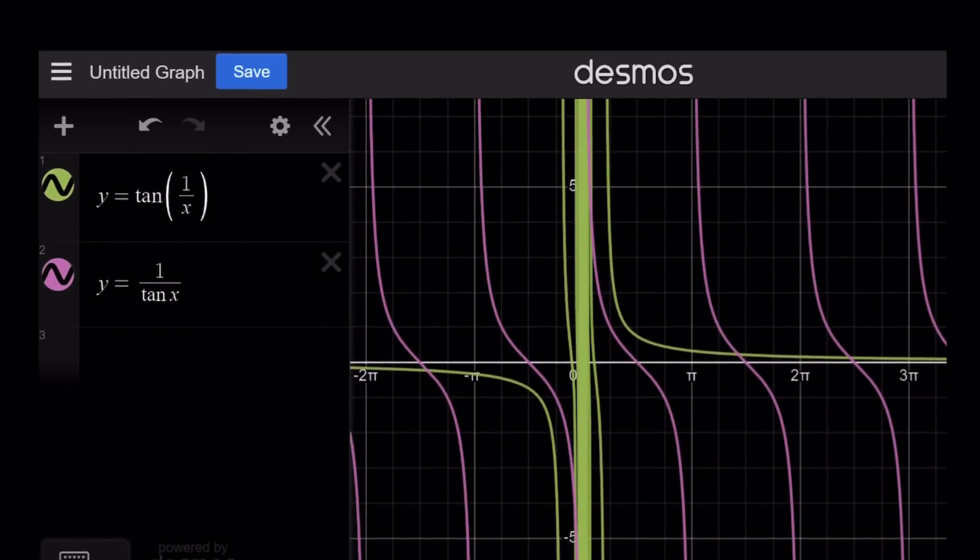The graph of y equals tangent 1 over x. This is going to be a super duper crazy graph. You see the oscillations. Very many oscillations around 0 because as x approaches 0 from the right and from the left, 1 over x is going to approach infinity, positive and negative infinity. And the tangent values are just going to be off the chart. So that's going to be kind of crazy. But notice that we have some nice intersection points which are actually solutions to this equation.